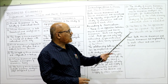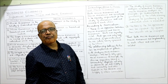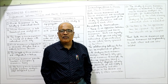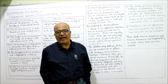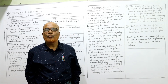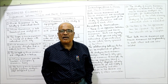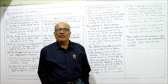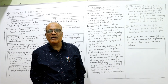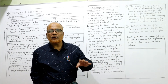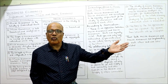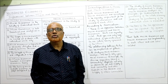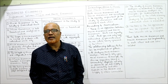Third point: neither of the two approaches can be ignored. We cannot ignore micro and conduct only macro study, nor can we ignore macro and study only micro. Both are interdependent and related to each other — they are complementary. Microeconomics is complementary to macro, and macroeconomics is complementary to micro.